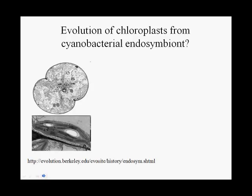Oxygenic photosynthesis was invented by cyanobacteria. This is a picture of a cyanobacterium, and I want to point out these membrane invaginations — these are the plasma membrane folded in. They are not true internal organelles, but what they do is increase the membrane surface area. That's important for cyanobacteria because all the photosynthetic light reactions occur in membranes. By increasing the membrane surface area through these invaginations, cyanobacteria are able to achieve higher rates of photosynthesis.